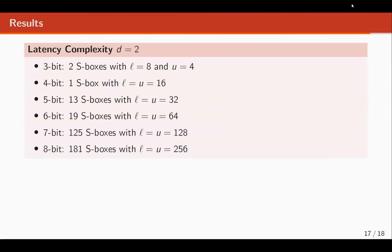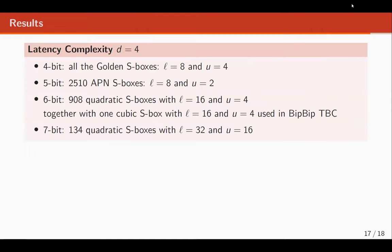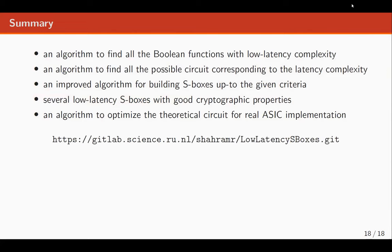We introduced a new, efficient algorithm that is good in computational complexity. Based on this, we found quite good S-boxes with low latency. For the case of latency complexity 4, we found 6-bit and 7-bit S-boxes with linearity 2^(N-2) and uniformity 2^(N-4). All results are publicly available at the provided address, and related code can be obtained by contacting the author.